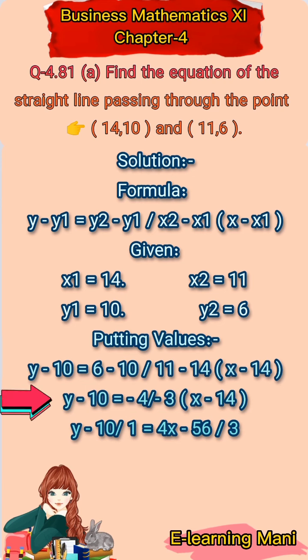y minus 10 is equal to 6 minus 10, जो के minus 4 होगा, upon 11 minus 14, जो के minus 3 होगा — क्योंकि 14, 11 से बढ़ा है, तो 14 का sign आएगा जो के minus है। Multiply करेंगे x minus 14 से। y minus 10 upon 1 है। अब numerator में minus 4 और denominator में minus 3 है, तो minus minus आपस में cut हो जाएंगे।